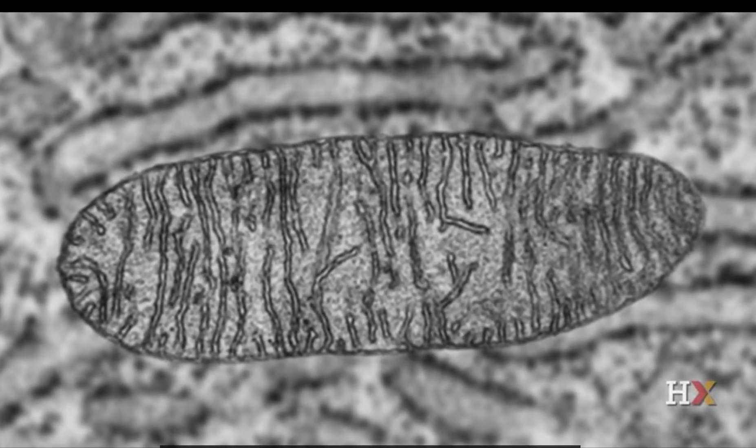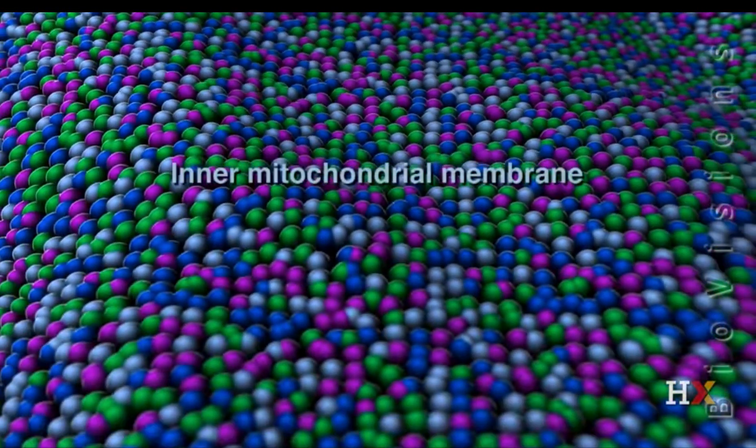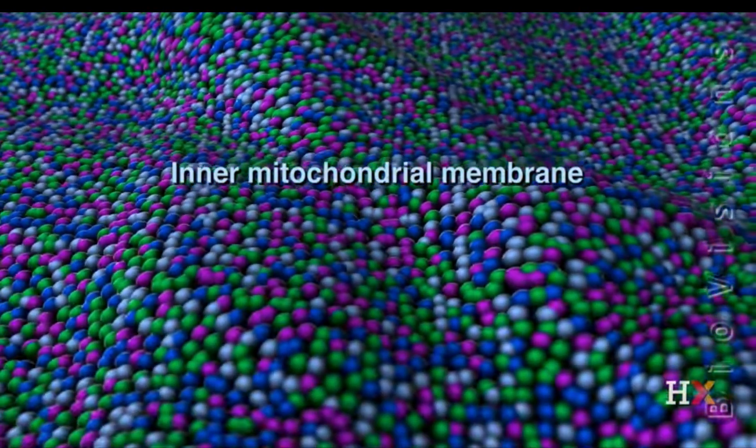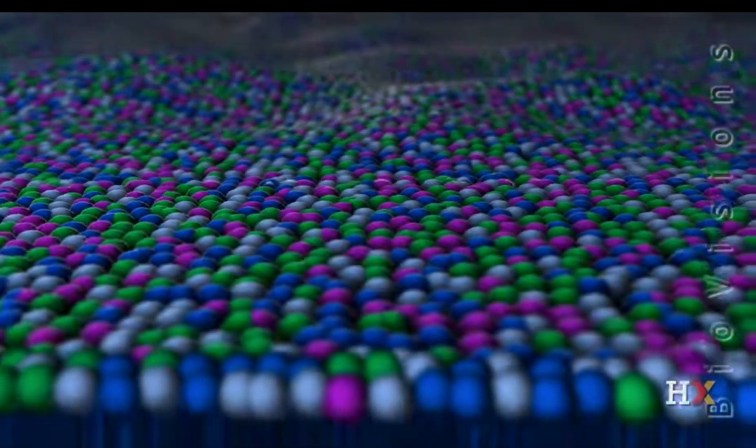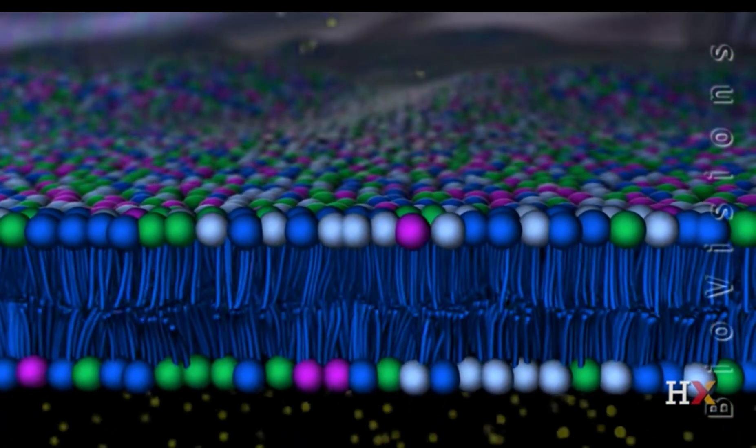Mitochondria are double-membraned organelles that harness most of the energy that cells need to grow and reproduce. Nearly all of this energy comes from reactions that take place at the inner mitochondrial membrane.